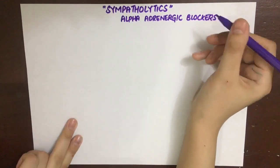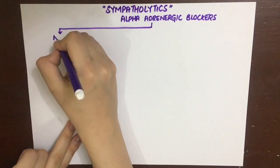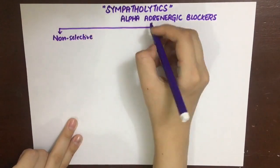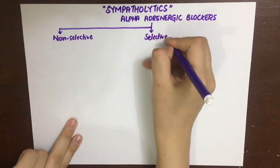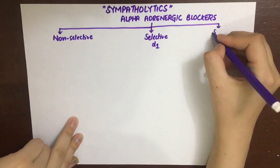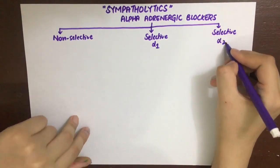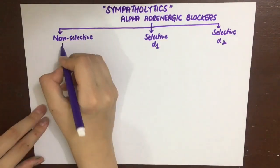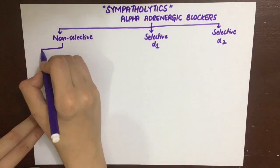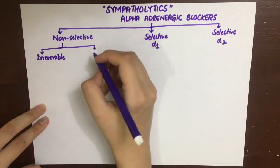These blockers can be divided into those which are non-selective for both alpha-1 and alpha-2, those that are selective for alpha-1, and those which are selective for alpha-2. The non-selective ones can further be divided into the irreversible ones and the reversible ones.